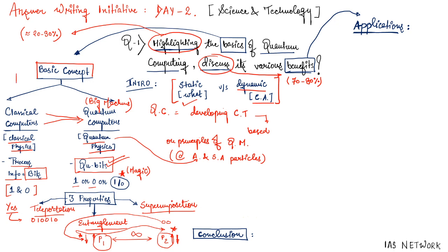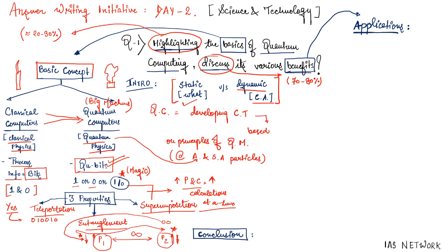You can understand with an analogy: if classical computers are candles, quantum computers are bulbs — that is the fundamental difference between them. Since quantum computers can show both states simultaneously (1 and 0), we get a far greater number of permutations and combinations, meaning more calculations can be performed at one time. To summarize the first part: give a brief introduction defining quantum computing, differentiate it from classical computers, and use the three terms — superimposition, entanglement, and teleportation.